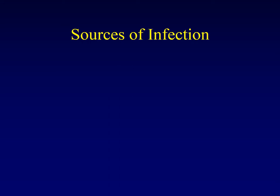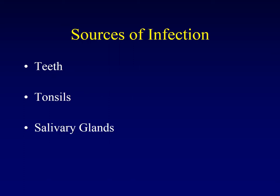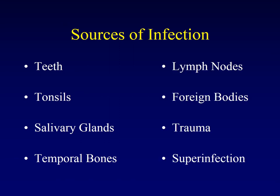The most common source of infection in adults by far is the teeth. In children it's a little different — here the tonsils are going to be the most common source of infection. But there are other potential sources including the salivary glands, the temporal bones, and a variety of other sources such as lymph nodes, retained foreign bodies, prior trauma, or superinfection of existing underlying structures.